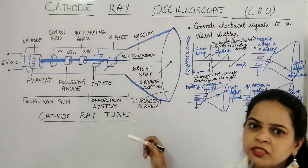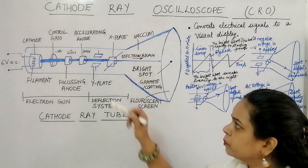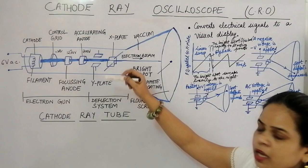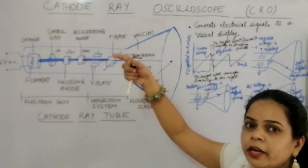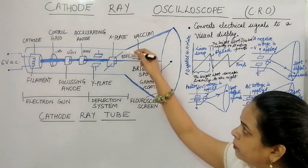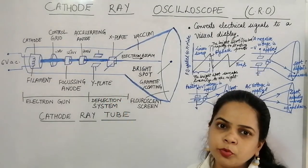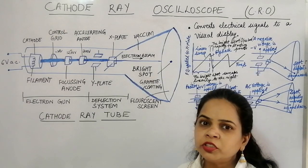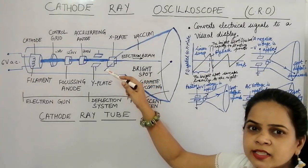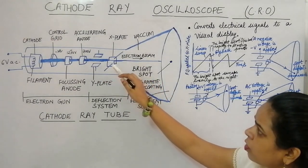The next constituent of the cathode ray tube is the deflection system. It consists of two sets of plates: the X plates and Y plates, placed perpendicular to each other. The Y plates are placed horizontally so the electron beam moves up and down, while the X plates are placed vertically so the electron beam moves left and right.